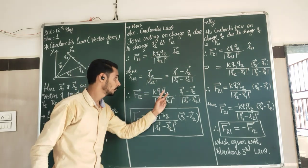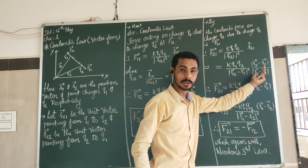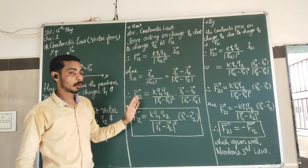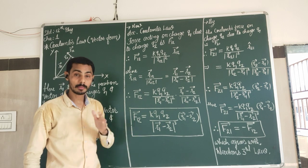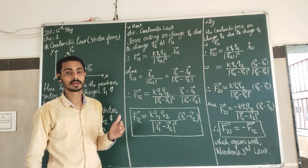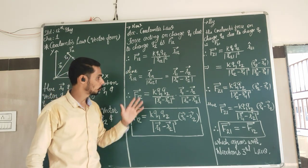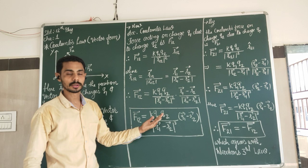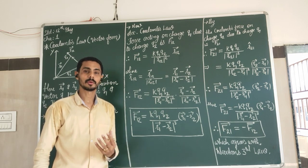For opposite charges, R1 minus R2 changes to R2 minus R1, giving the correct direction automatically. So this is Coulomb's law in vector form. This formula is very important for finding forces in numerics. Direction is most crucial because without the correct direction there is no correct answer. If you still have any query on any step or any topic, you can ask me. Thank you.